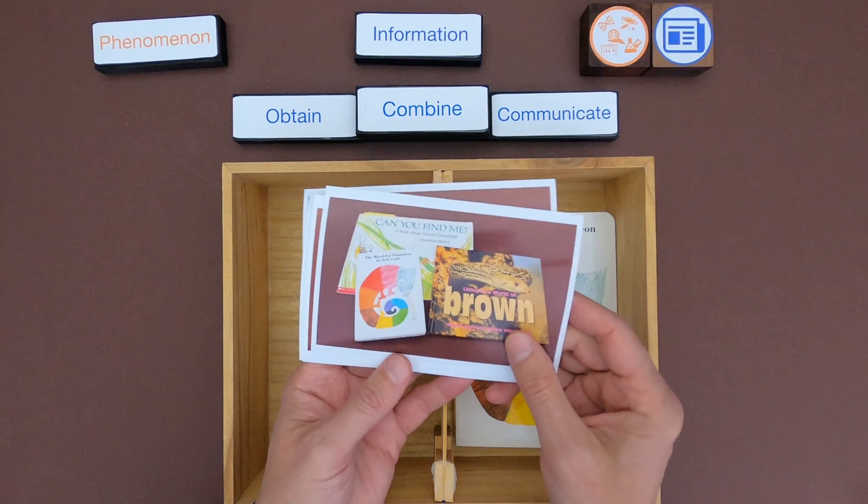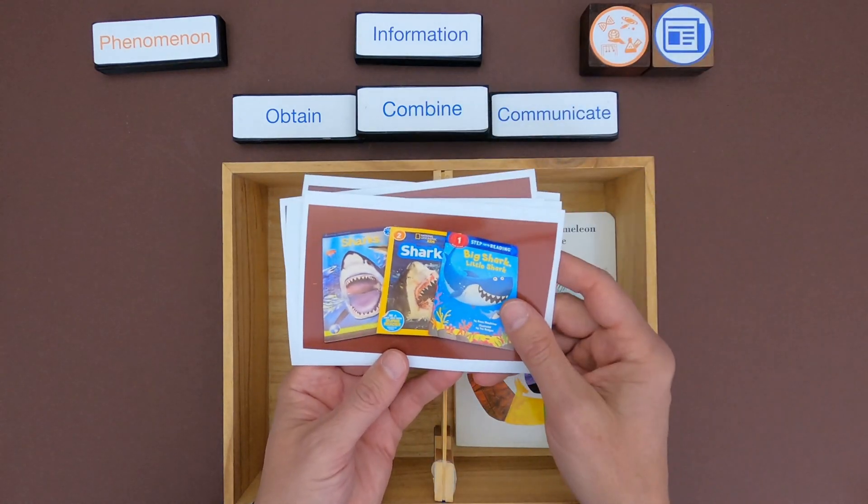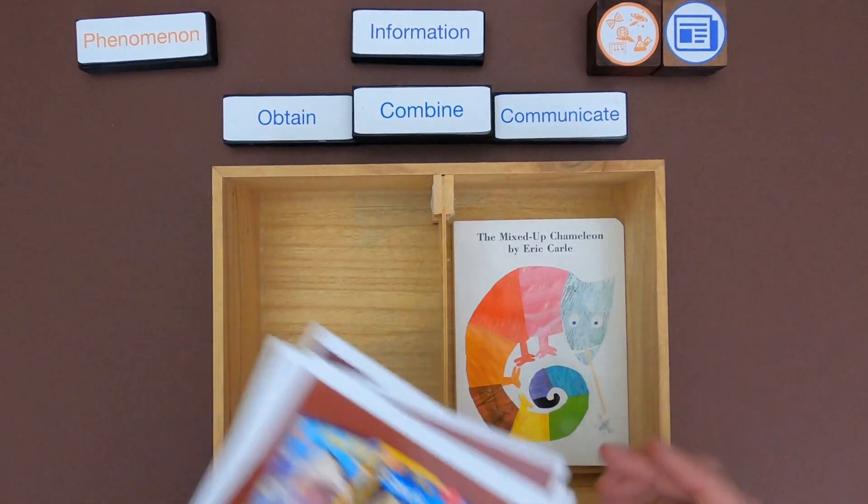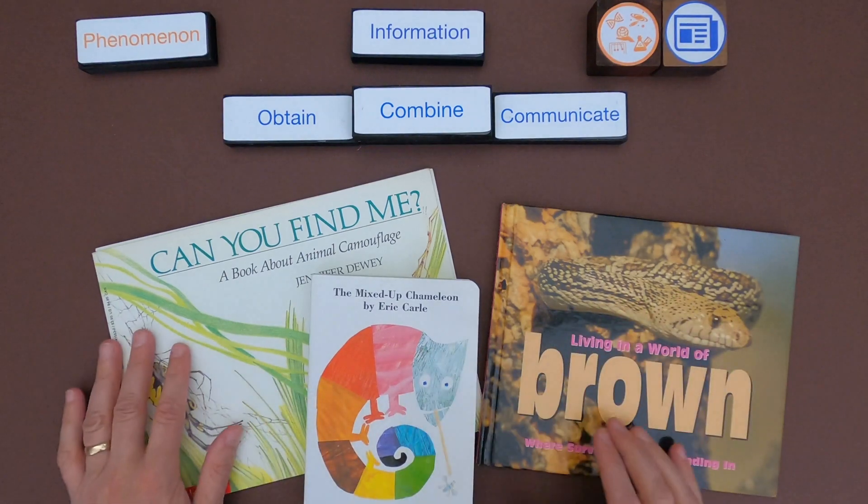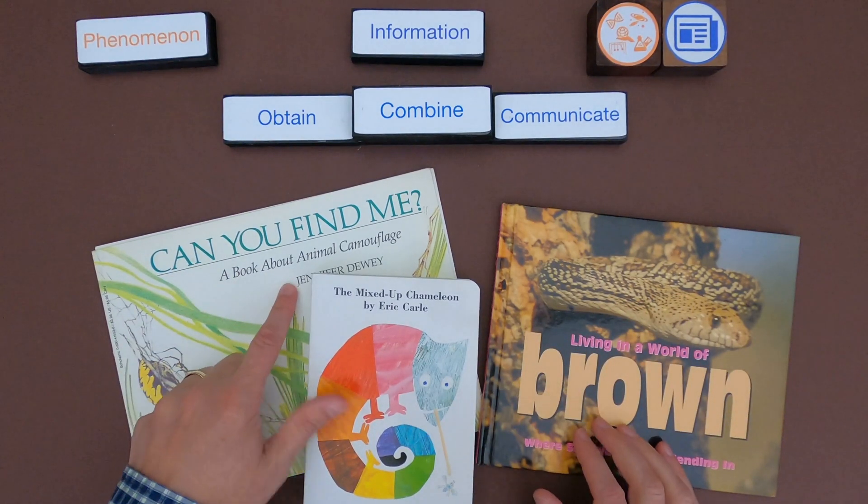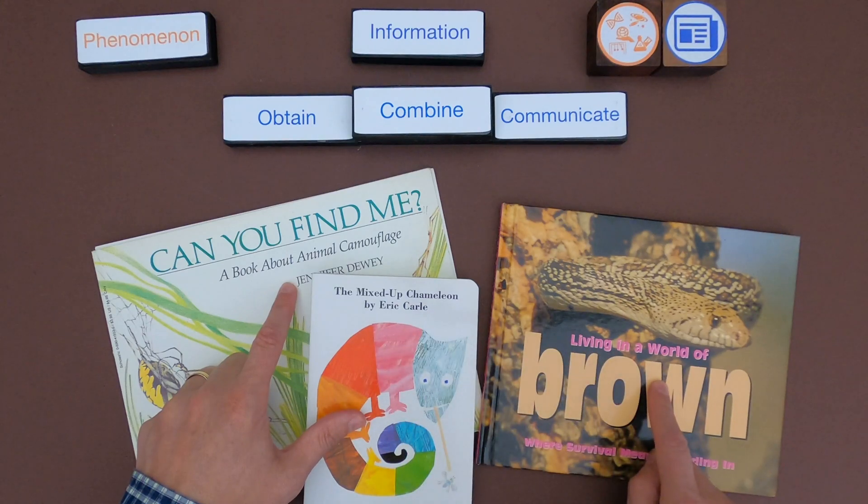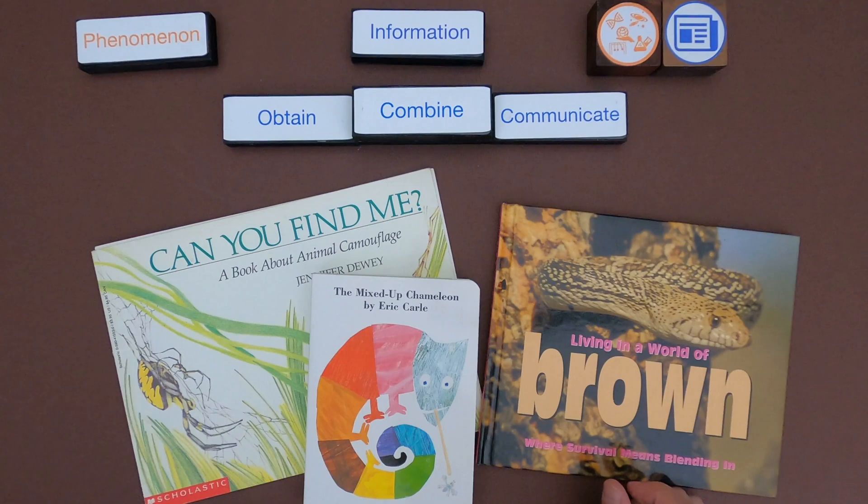I'm going to start by showing you my thinking around texts that are related to camouflage, and then you'll have a chance to do the same with sharks. And so let me clean this up and then we'll get started. Okay, so you can see that I have three texts on here. This is Can You Find Me about animal camouflage. We've got The Mixed Up Chameleon and then Living in a Brown World. And so the first thing I want to do is I want to write down and identify what's the phenomena.